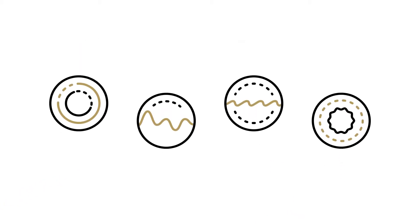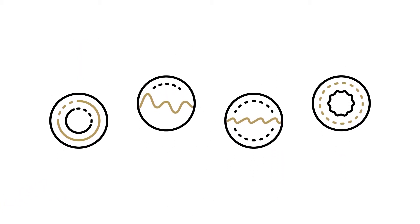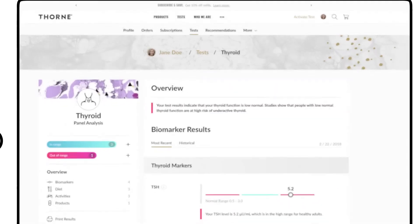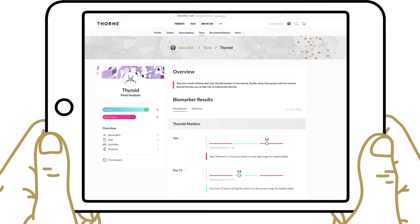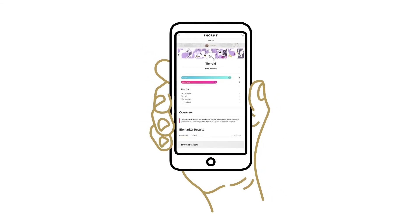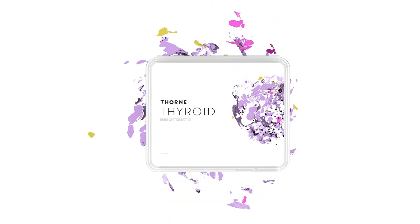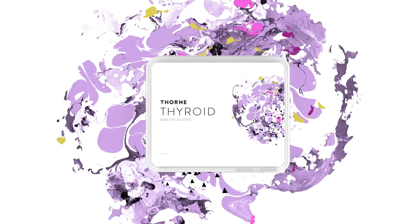Thorne's at-home thyroid test determines the levels of these four thyroid hormones. Its test gives doctors the in-depth results he or she needs to make a diagnosis, and it gives an individual a convenient at-home way to test with easy-to-understand results and personalized health recommendations.